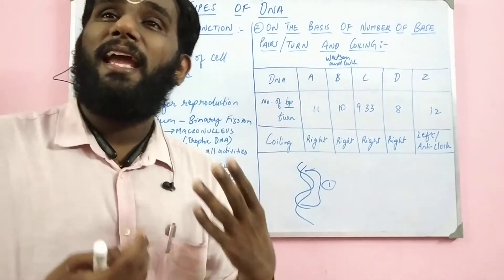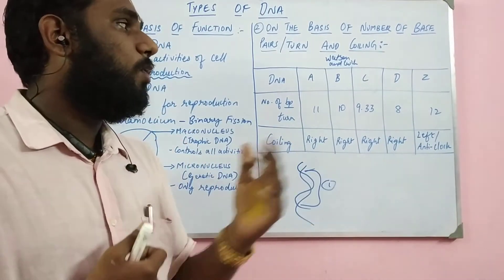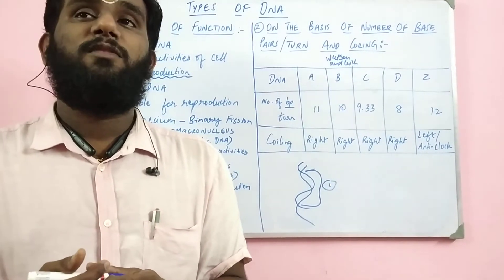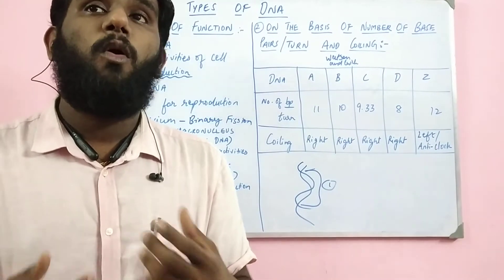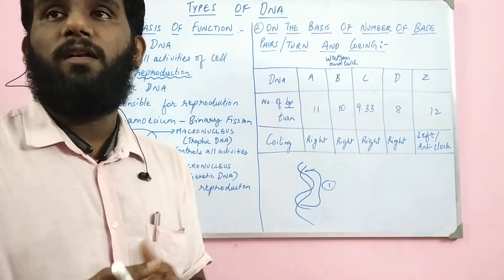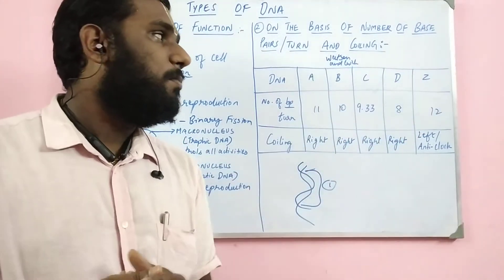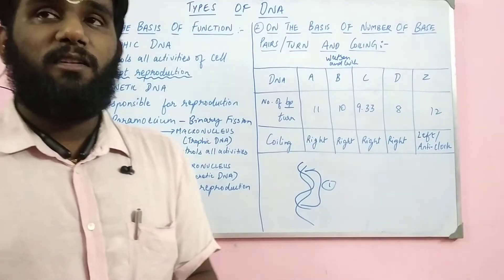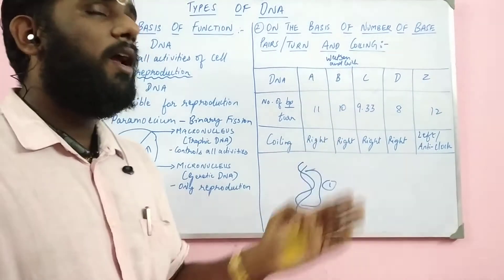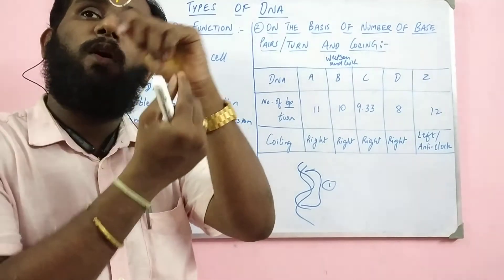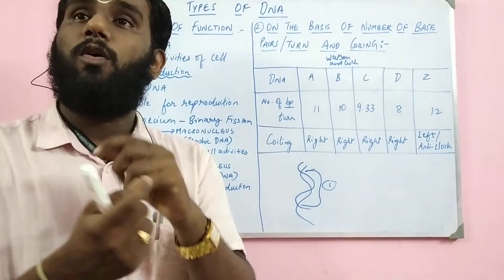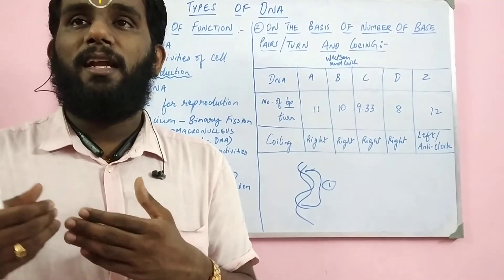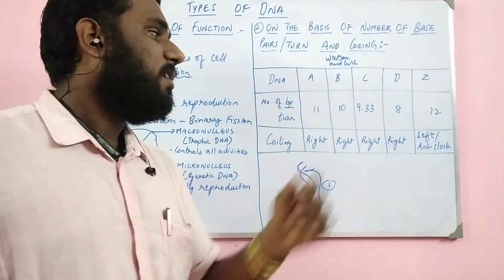D-DNA contains only 8 base pairs per turn. And if you look at Z-DNA, it consists of 12 base pairs per turn. So if you ask which model contains the most base pairs, it is simply Z-DNA. Z-DNA is also special for its coiling direction — while all other DNA models coil on the right in a clockwise direction, Z-DNA is coiled in the anticlockwise direction.